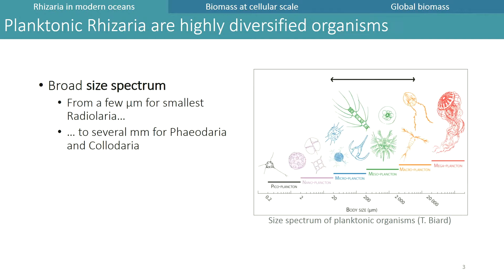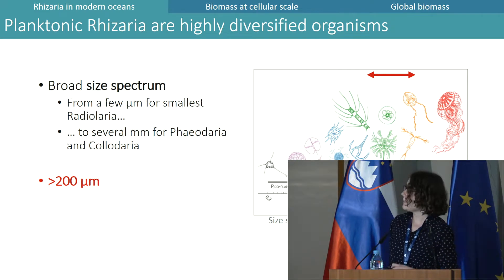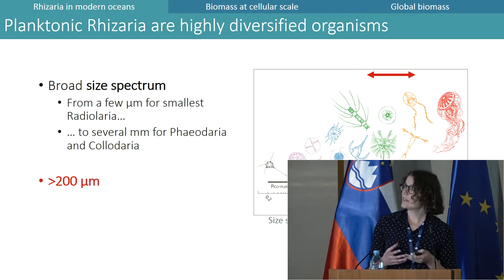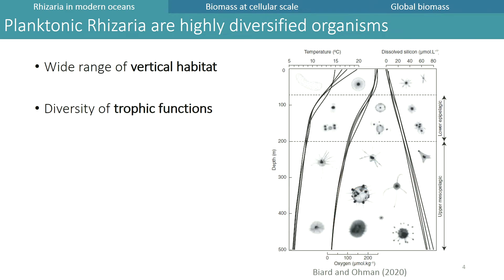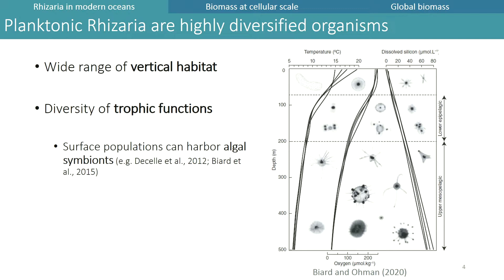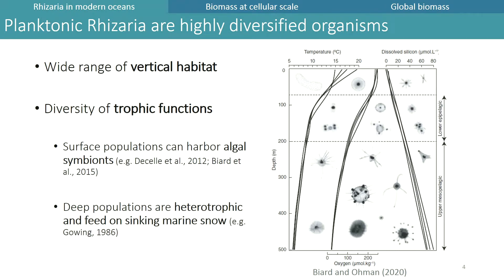These taxa are highly diversified and occupy a broad size spectrum, ranging from a few micrometers for the smallest Radiolaria to several millimeters for Phaeodaria and Collodaria. In this talk I will mainly focus on large Rhizaria whose size is above 200 micrometers. In modern oceans, Rhizaria inhabit a wide range of vertical habitats with a diversity of trophic functions. Surface populations, mostly Radiolaria, can harbor algal symbionts and be mixotrophic.